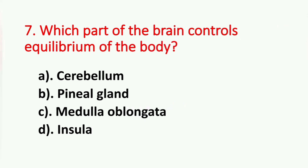Question number 7. Which part of the brain controls equilibrium of the body? Option A: Cerebellum. Option B: Pineal gland. Option C: Medulla oblongata. Option D: Insula. The answer is Option A, Cerebellum.